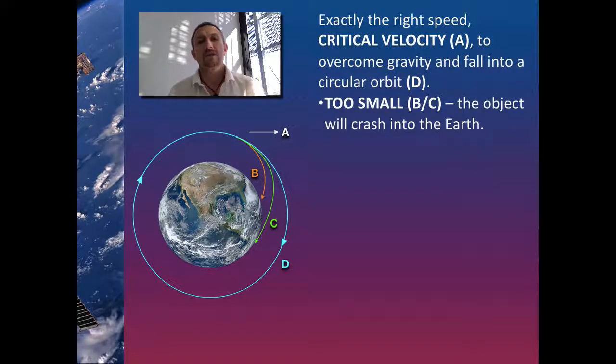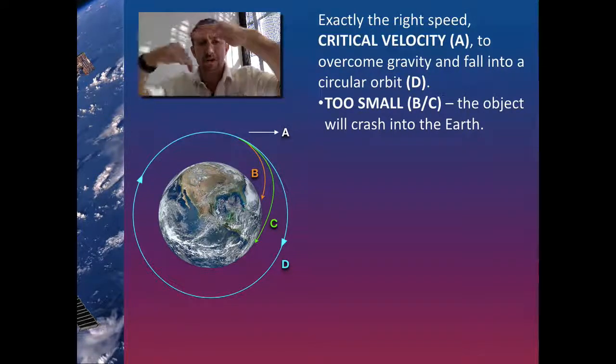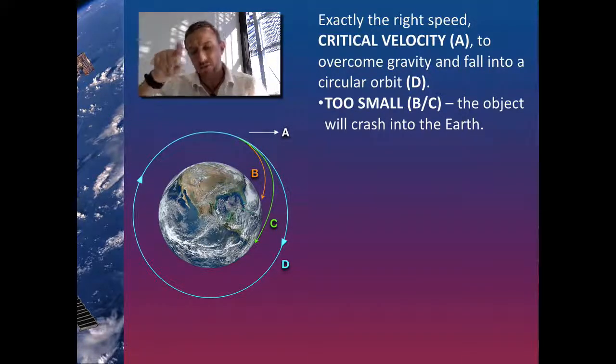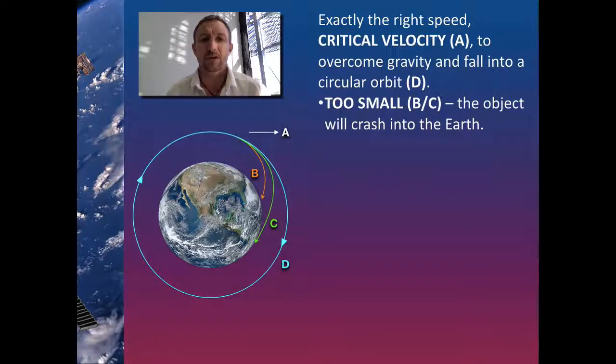So the result is we've got to find the critical velocity at the height that the object happens to be to overcome the effect of gravity. So basically for every motion it goes this way, it's going to have an equal motion this way which pulls it at an angle. That angle subsequently all the way around will produce our circular motion.